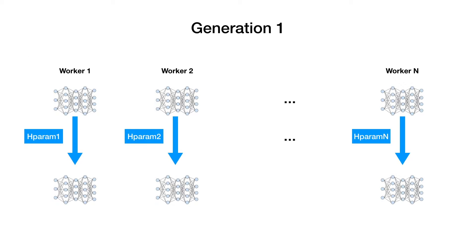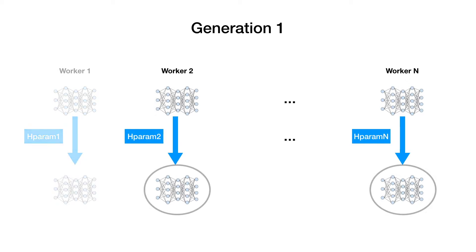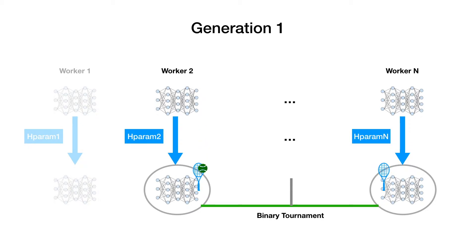At the end of the first generation, we have obtained n different models from different workers. And for every worker, we sample another worker and compare the performance of their models, and we call this process binary tournaments. In this case, the model on the right, corresponding to worker n, performs better, so it becomes the winner of this competition.